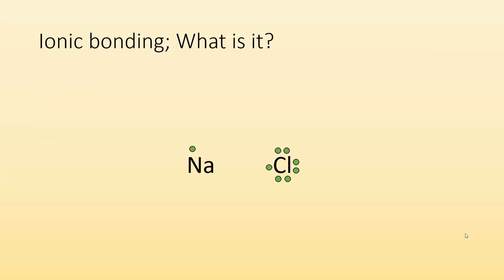So let's start. Ionic bonding. What is it? Moral of the story, it's when one atom loses an electron and another atom gains those electrons. So here I have sodium losing an electron to chlorine.